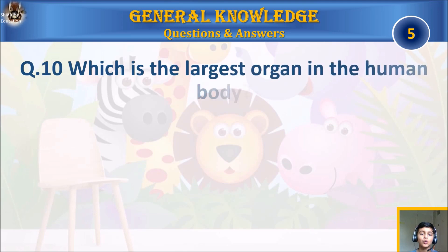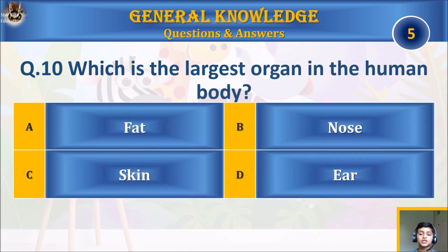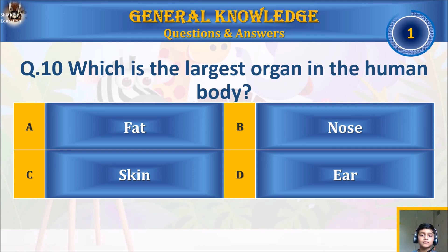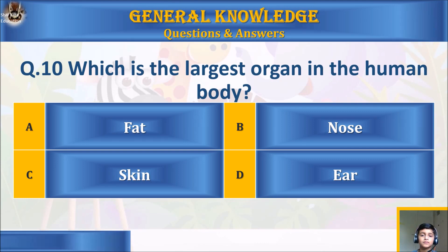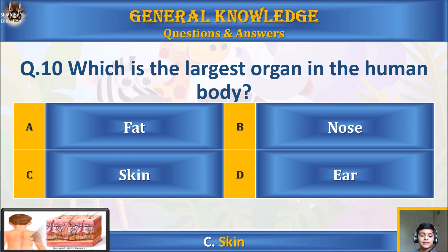Question ten: which is the largest organ in the human body? A) fat, B) nose, C) skin, or D) ear? Your time starts. The answer is C) skin.